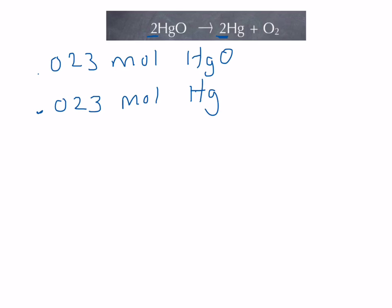Because of the 2 to 2 or 1 to 1 ratio. If we wanted to know, and often you do need to know, how many moles of the other things in the reaction we have, in this case it's oxygen, which is in a 1 to 2 ratio with mercury oxide.